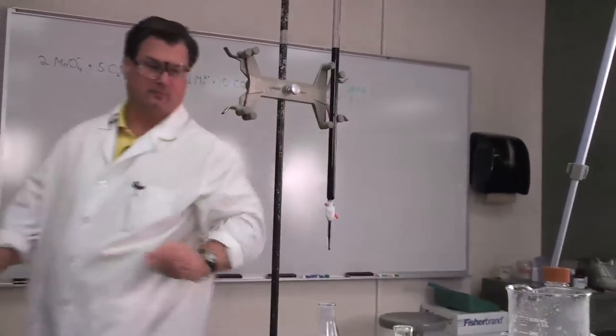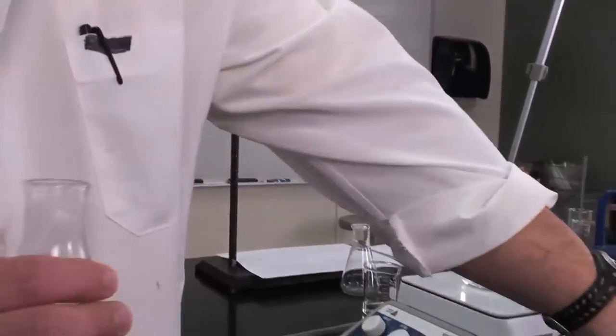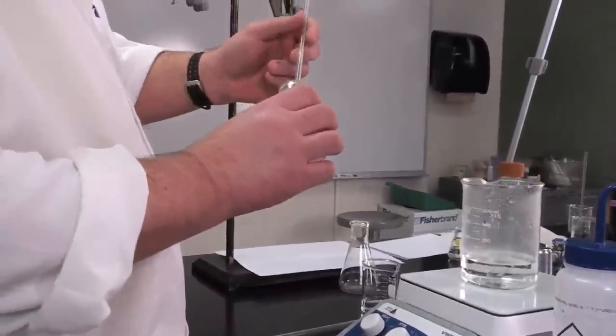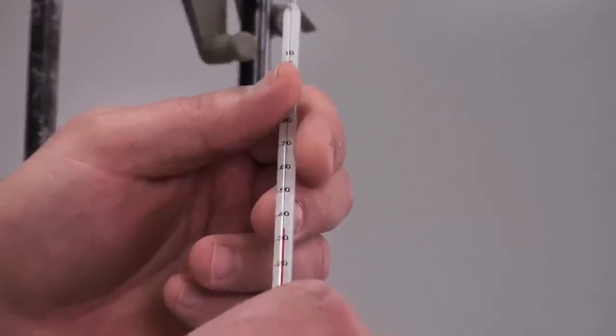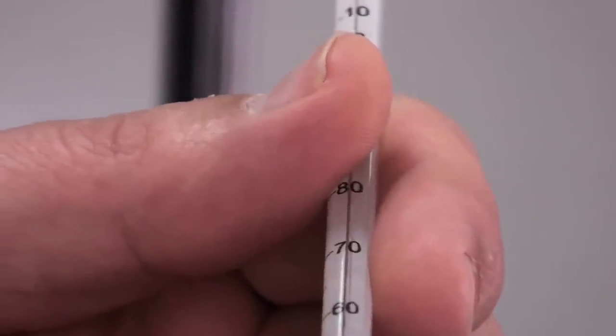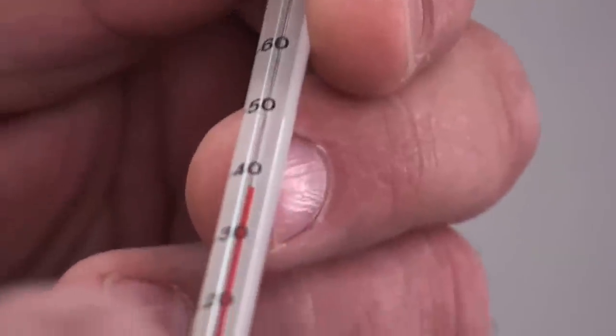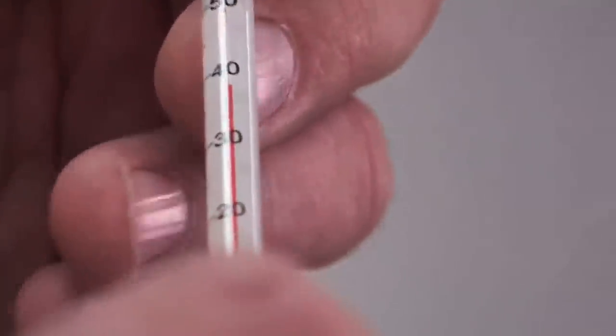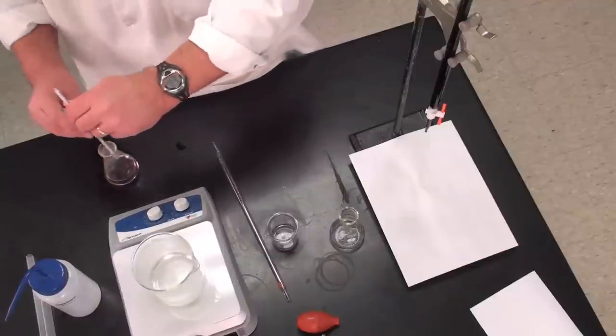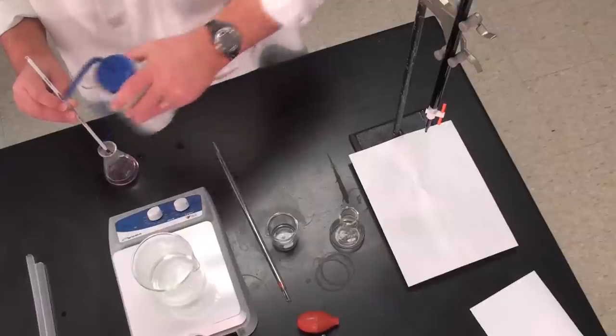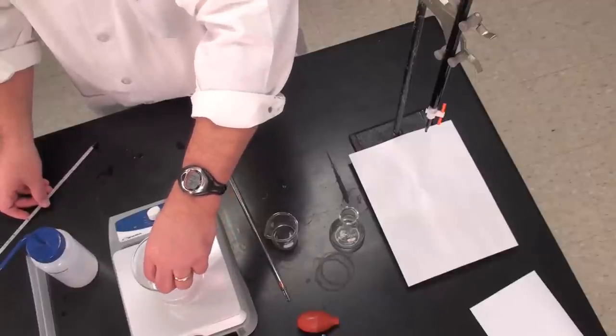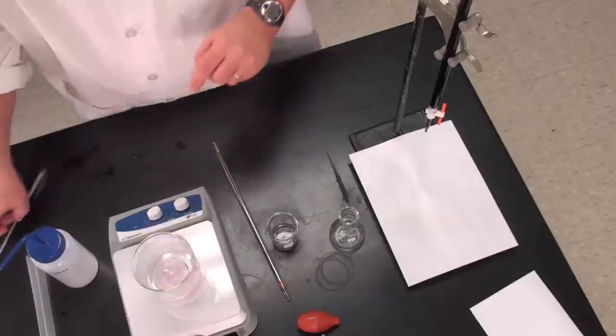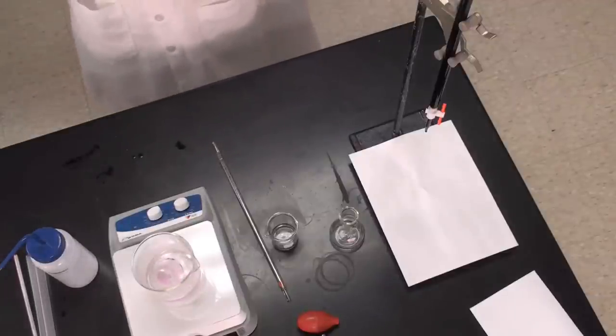I also want to check the temperature of my solution just to make sure it hasn't gotten too cool. So I'm going to verify that my temperature is still reasonably high. Ideally we'd like it to be above 60 degrees still. Looks like we're at about 40. So what I'm going to do is warm it back up a little bit and see if that color disappears, because if it does that means we didn't quite hit it because it wasn't warm enough.